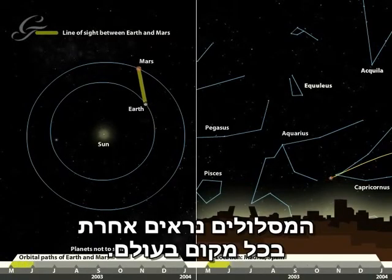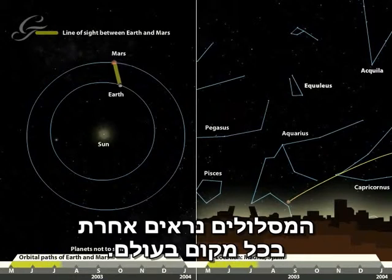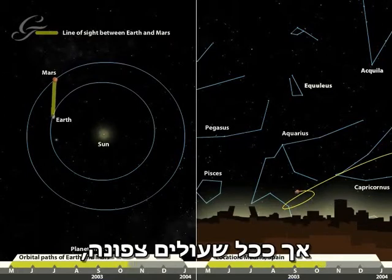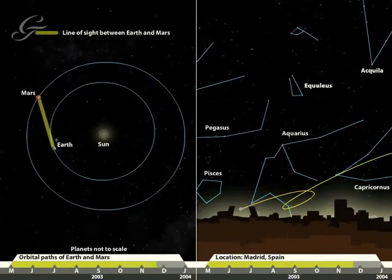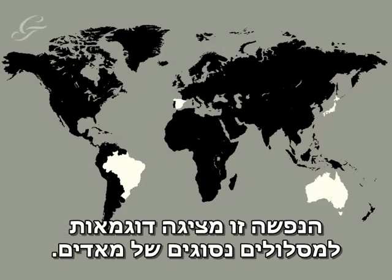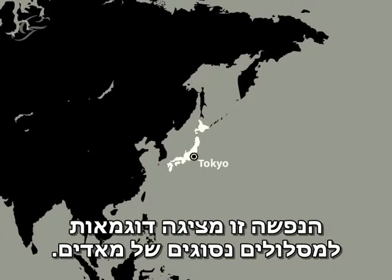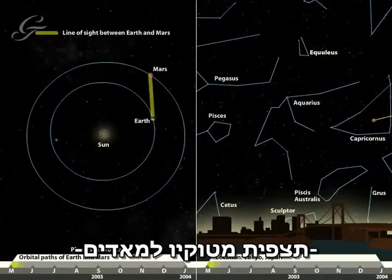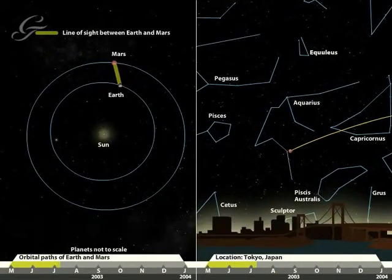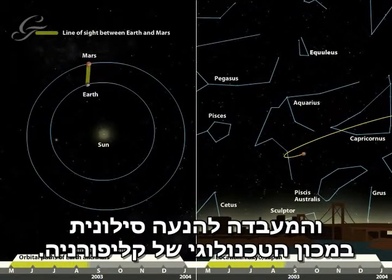The orbits appear different when viewed from different places around the world. At the equator, Mars travels almost vertically, while the further north or south you go, the more tilted its path becomes. This animation shows examples of retrograde orbits of the planet Mars, with visualizations based on images provided courtesy of NASA and the Jet Propulsion Laboratory at the California Institute of Technology.